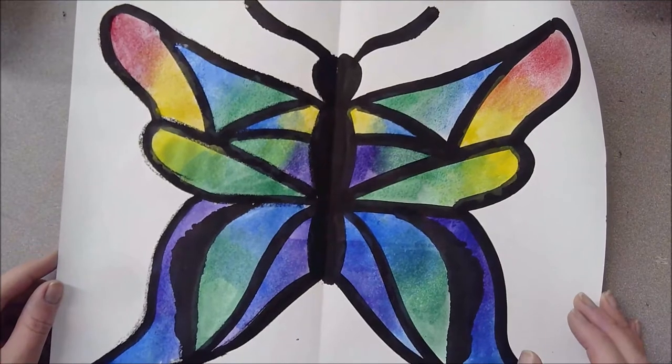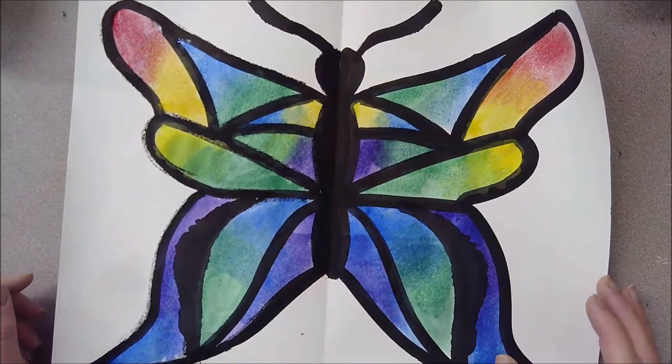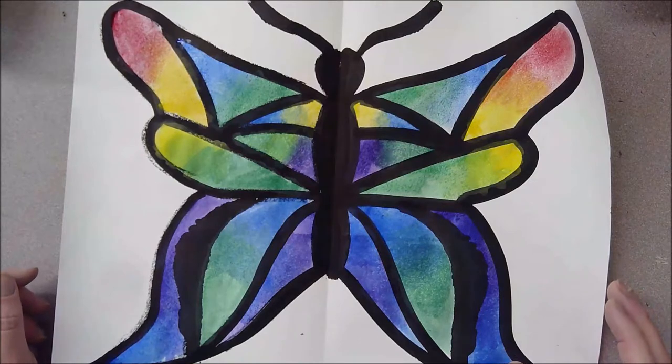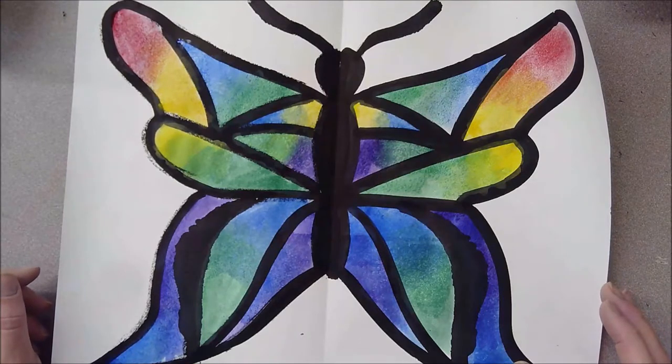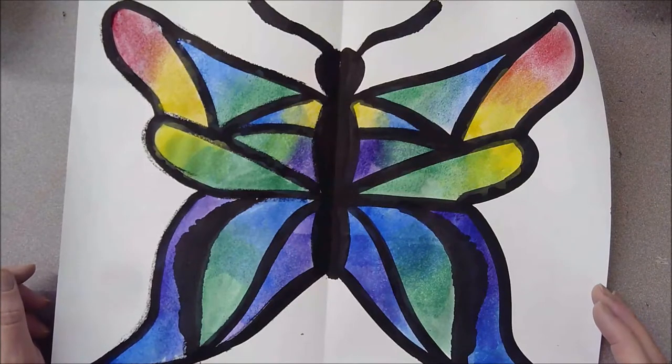We're going to be making a butterfly using a variety of materials. We are going to be using a technique that requires some folding and symmetry, and this project was inspired by Cassie Stevens.